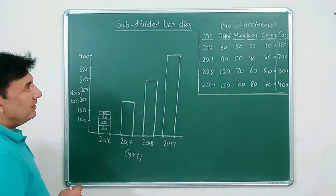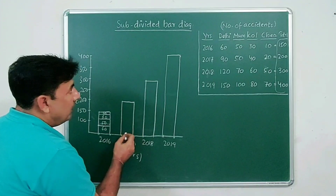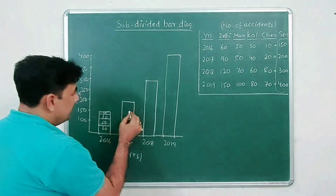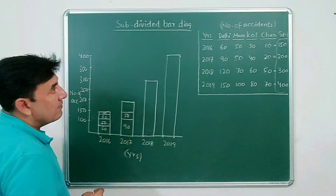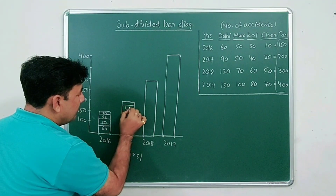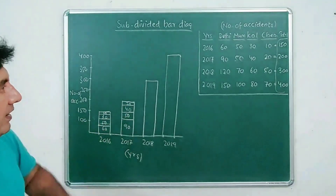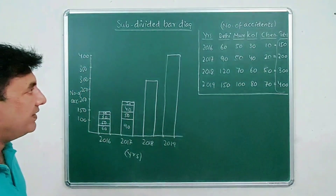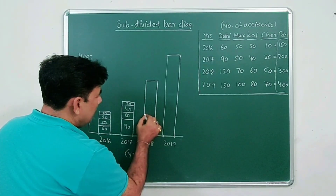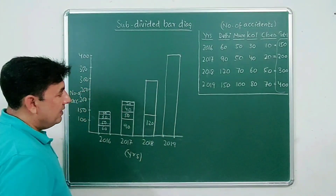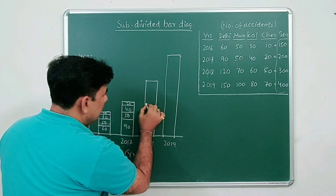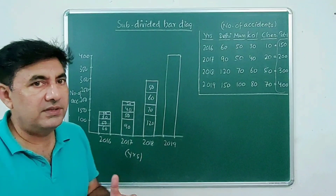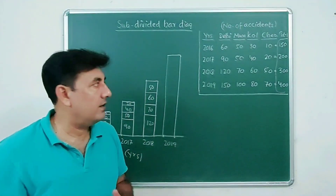For 2018, the total is 300, subdivided into 120, 70, 60, and 50. So 120 will be somewhere here, then 70, then 60 and 50. When you draw this with a scale ruler it will be more accurate. For 2019, the total is 400, subdivided into 150, 100, 80, and 70.